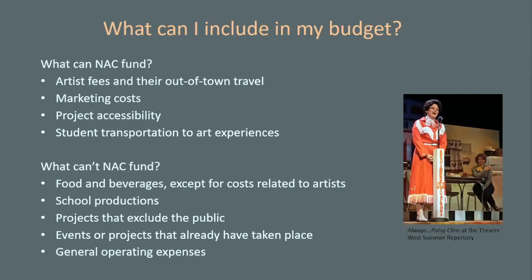For events that have already taken place, that's another one we don't fund. If you go to our grant guidelines, there are specific deadlines that show you the date range the activity must take place. For instance, if something says it is due six weeks prior to the start date, that clearly means you can't have already started the project. And generally, we don't support operating expenses — we'll talk a little later about administration expenses.